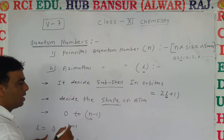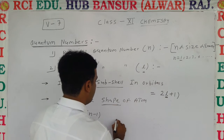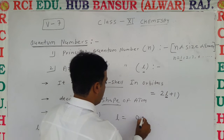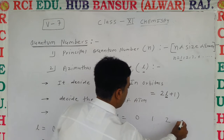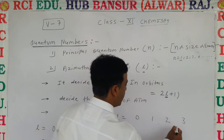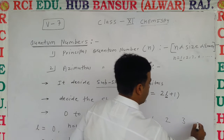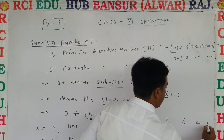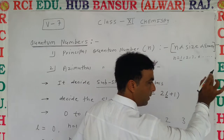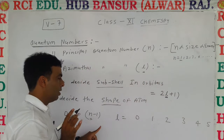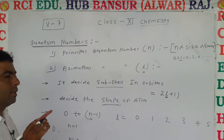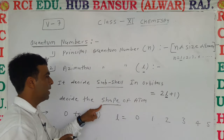So l values will be 0, 1, 2, 3, 4, 5, and so on. On the basis of these l values, we decide the sub-cell names.